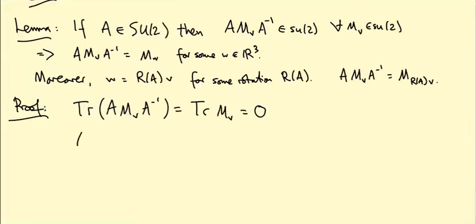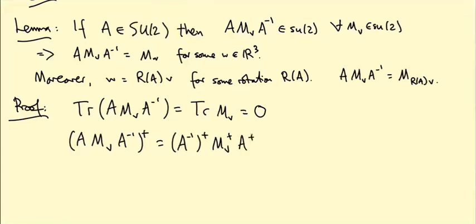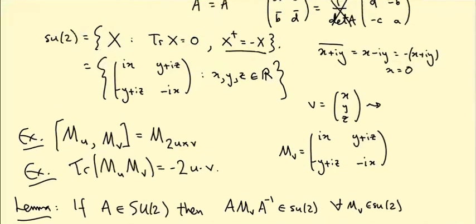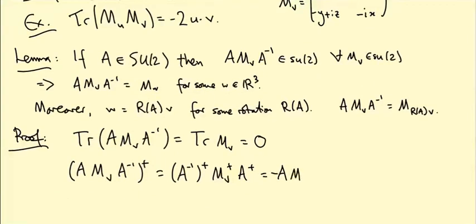Second, (A·M_v·A⁻¹)† = (A⁻¹)†·M_v†·A†. Since A is unitary, A† = A⁻¹, so (A⁻¹)† = A and A† = A⁻¹. Since M_v ∈ su(2), M_v† = −M_v. So we get A·(−M_v)·A⁻¹ = −(A·M_v·A⁻¹), which is exactly what we need. Together these confirm A·M_v·A⁻¹ ∈ su(2).